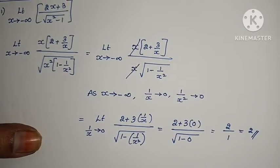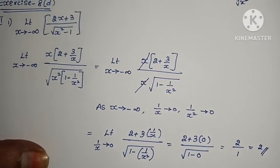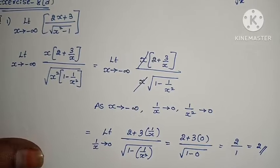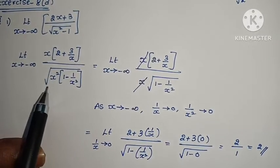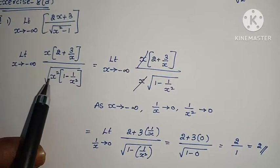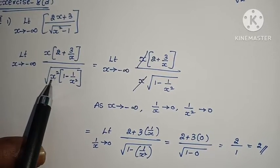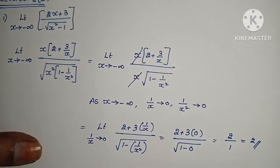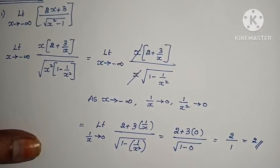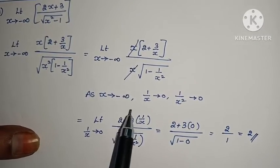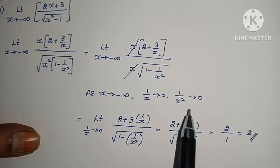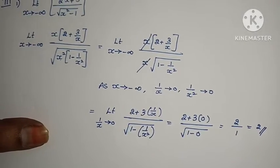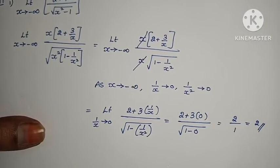This problem is complete. It is very easy. We take 5x common and x common. But there is a root — the root is squared and cancels with x. As x tends to minus infinity, 1/x and 1/x² tend to 0. The answer is very simple.